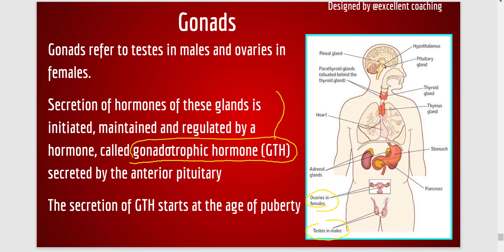Before puberty, GTH is not secreted, so sexual hormones are secreted only after the age of puberty, which starts around 10 to 11 years. When GTH stimulates the ovaries in females, the ovaries produce two types of hormones: estrogen and progesterone. Estrogen guides the sexual development of the female body, and all the primary sexual characteristics related to reproduction are guided by estrogen.